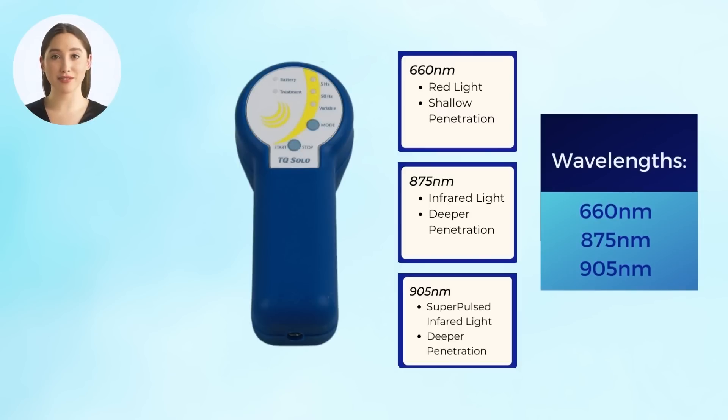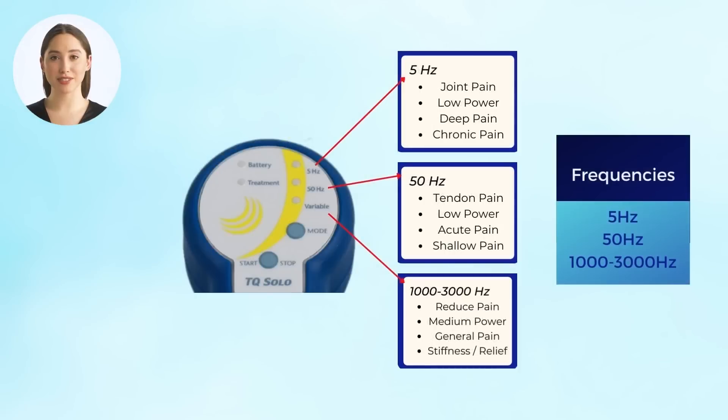The device also has three modes or frequency options. The lower the frequency, the deeper the laser will penetrate. 5 Hz is meant for deep chronic pain, 50 Hz is for tendon and shallow pain, and the variable setting, 1,000 to 3,000 Hz, is meant for superficial stiffness and general pain management.